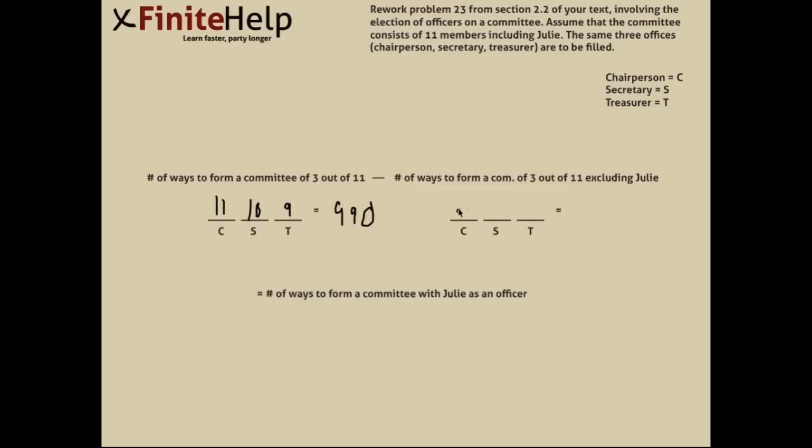So for the second part, we're finding the number of ways to form a committee of three out of 11, excluding Julie. So, like I said, you just subtract Julie from the 11 members, and that leaves you with 10. So then you've got 10 to pick from, then 9, then 8. Multiply those together, and you get 720.